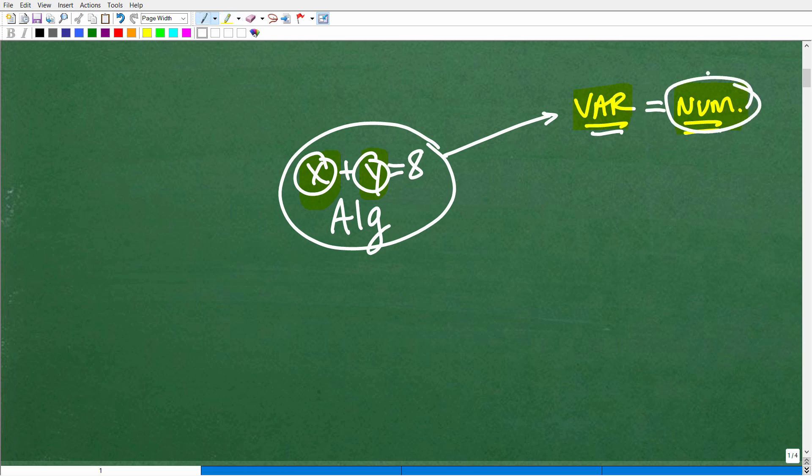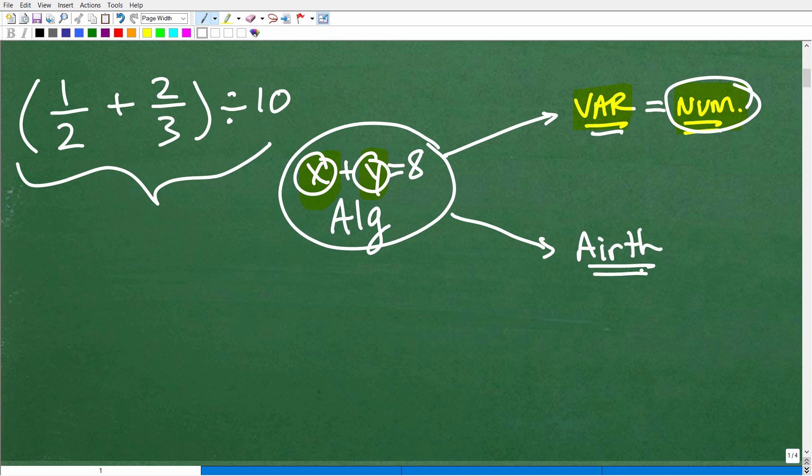Now, because they represent numbers, we've got to be super good at the math that involves only numbers. So what would that kind of math be like? Well, like 1 half plus 2 thirds divided by 10, for example. So again, we're going back to elementary school, primary school, all that good arithmetic stuff. So to be successful in algebra, you have to be successful in arithmetic. Math does build upon itself. You've got to understand how to work with numbers because variables represent numbers. So you've got to be super strong in arithmetic.